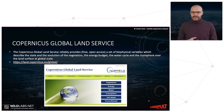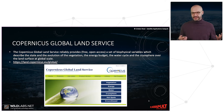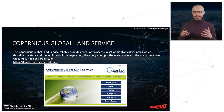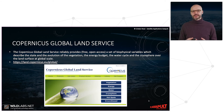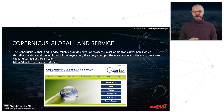The Copernicus Global Land Service provides free, open-access data with different types of products describing the state and evolution of vegetation, the water cycle, and more. The website is noted in this slide.